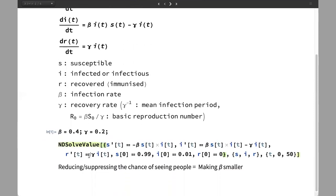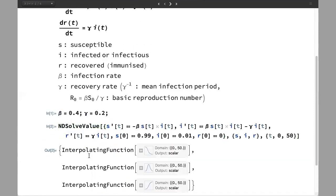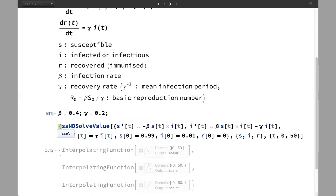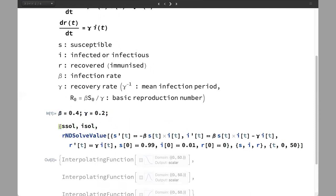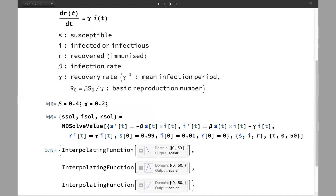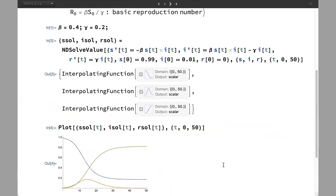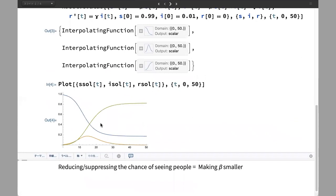By using this, we get three interpolating functions as a solution. Let's name them for simplicity: S solution, I solution, and R solution. Then we can plot them like this. This is just as simple as this.